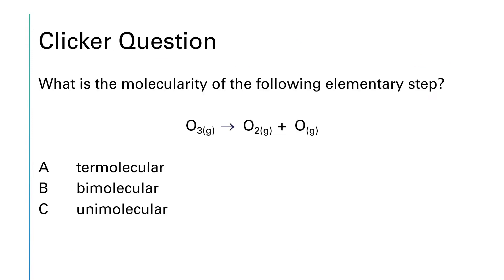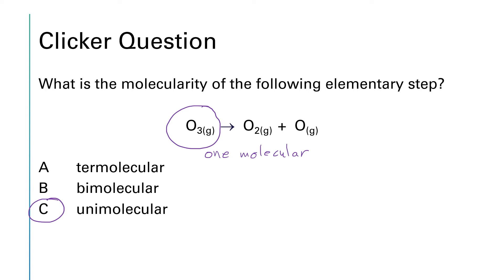What is the molecularity of this elementary step? We have ozone reacting to give O2 plus atomic oxygen. To determine the molecularity, we look at the reactant side. On the reactant side there's one molecule, so that means it's a unimolecular reaction — and again that'll be apparently unimolecular. It's got to collide with something, but it's not critical to the reaction rate as to just what it collides with.